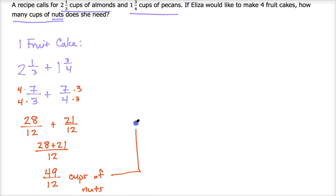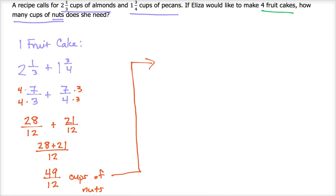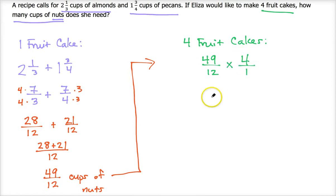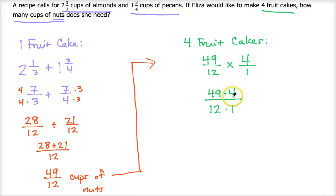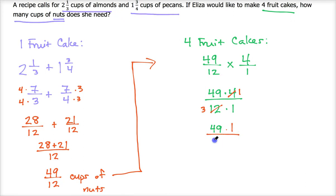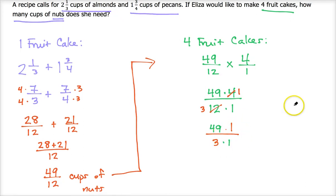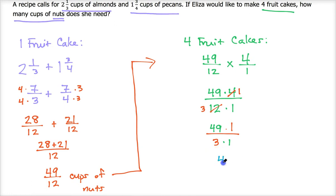Now for the second part: I need to figure out how many total cups she needs to make four fruit cakes. So I take 49 twelfths and multiply by four, written as four over one. That gives 49 times four over 12 times one. I can cancel the four and the twelve — both are divisible by four — giving one and three. So we're doing 49 times one over three times one, which gives us the improper fraction 49 over three.